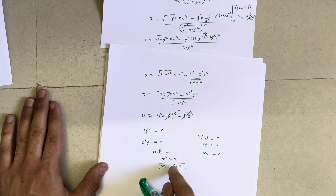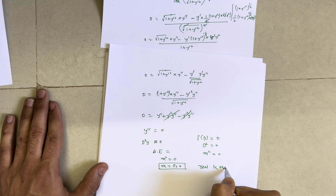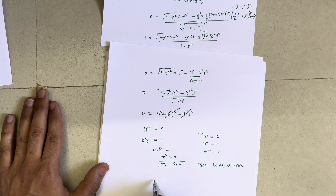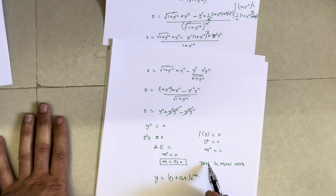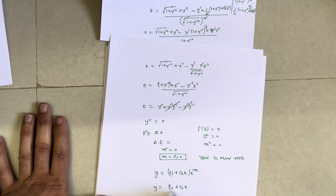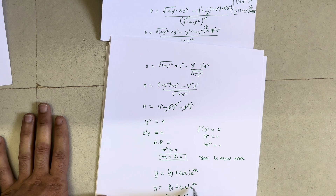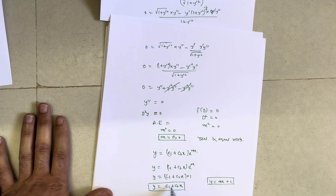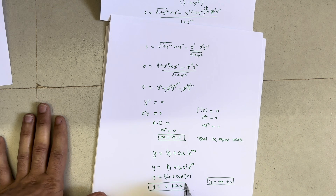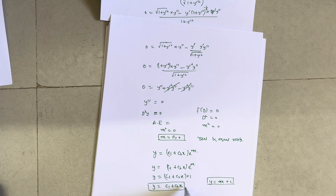For real and equal roots, the general solution is y = (c1 + c2·x)e^(mx). With m = 0, e^(0·x) = 1, so y = c1 + c2·x. Comparing this with the standard straight line equation y = mx + c, we see this is exactly a straight line equation.